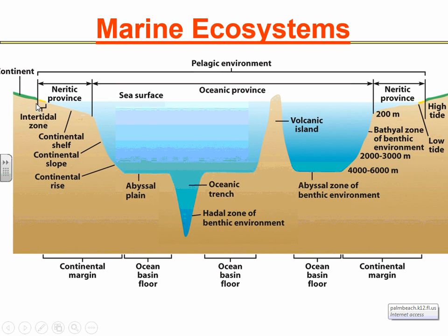We have the intertidal zone, which is the yellow portion. We have the benthic environment — just like lakes and ponds, it's the bottom portion of the marine ecosystem. And we also have the pelagic environment, which is basically the whole ocean, broken down into the neritic province as well as the oceanic province.